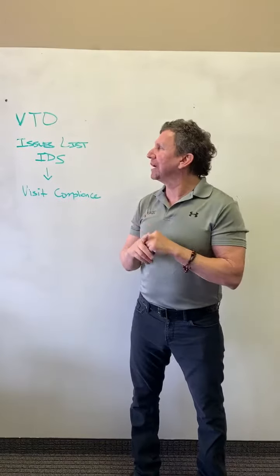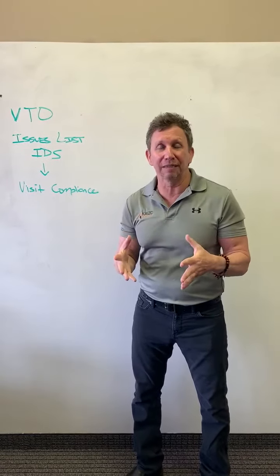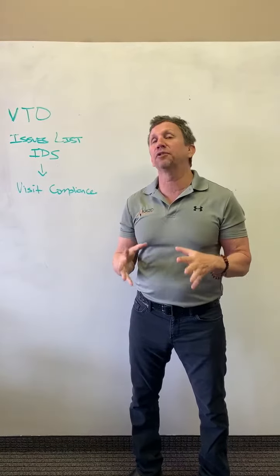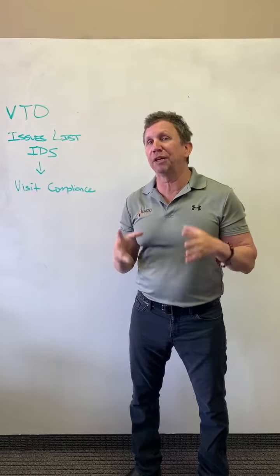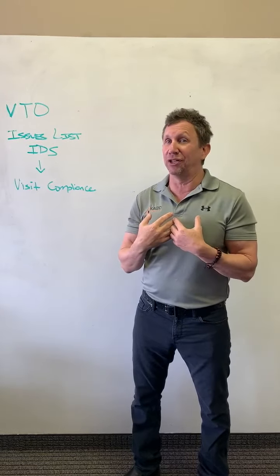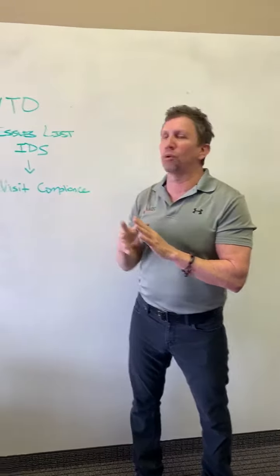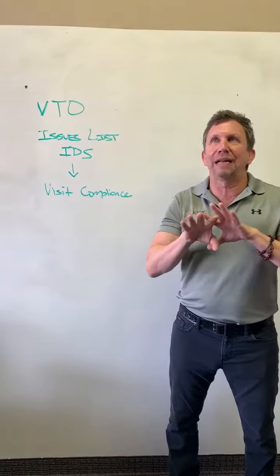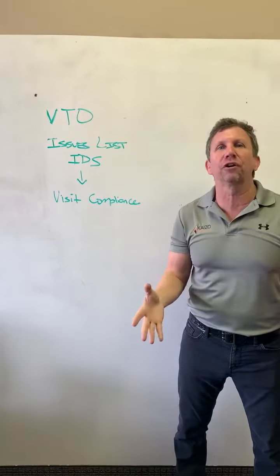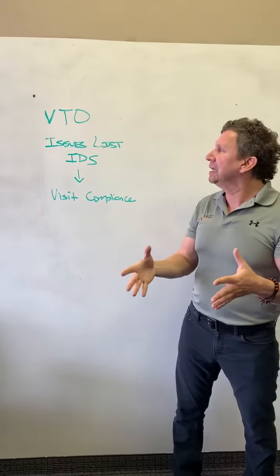The Vision Traction Organizer is part of the Entrepreneurial Operating System. This comes from the book Traction by Geno Wickman. I was actually trained by Geno — great guy, super smart. And the Vision Traction Organizer is really a way to set forth the overall strategy for your practice.